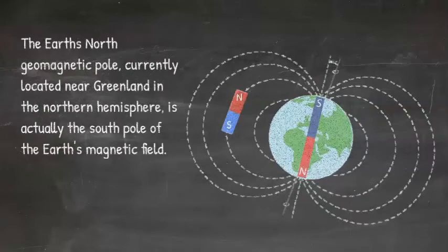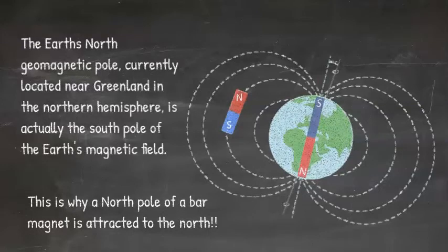Notice how the earth's north geomagnetic pole, currently located near Greenland in the northern hemisphere, is actually the south pole of the earth's magnetic field. This is why a north pole of a bar magnet is attracted to the north.